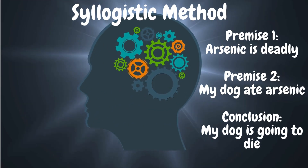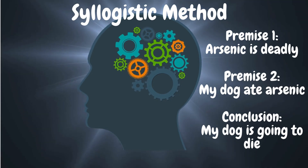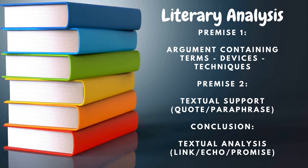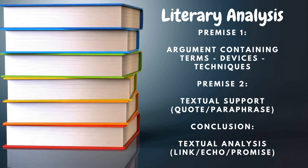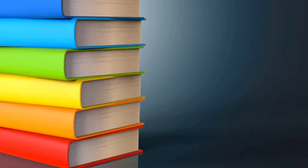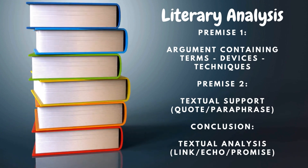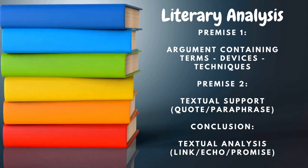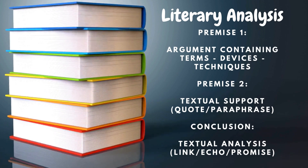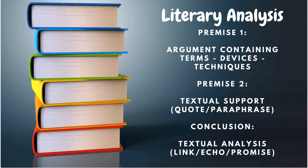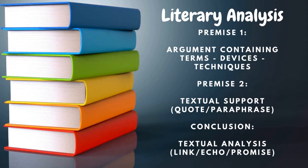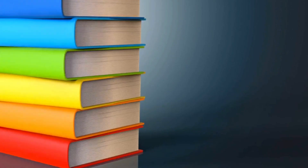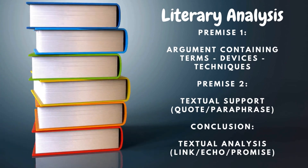So how do we take Aristotle's heuristic and morph it into a heuristic to perform literary analysis? Premise one for literary analysis is going to be an argument containing terms, devices, and techniques. Keep in mind that literary analysis is an expository mode, and all expository writing is an act of argumentation. There's a huge difference between plot analysis and literary analysis. That first premise is going to take three sentences.